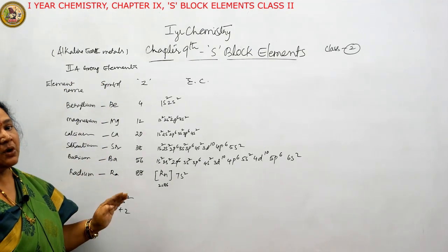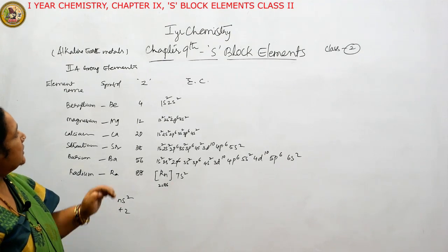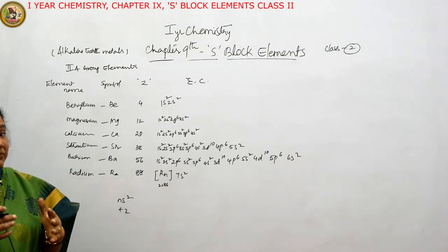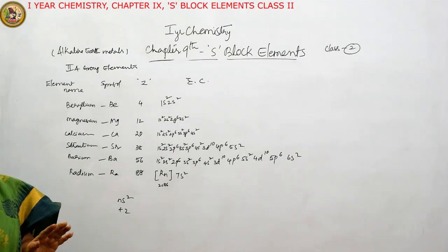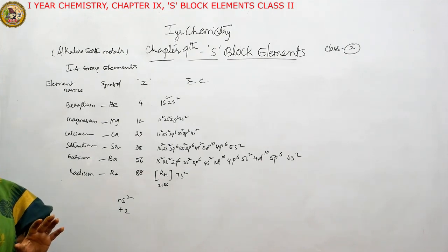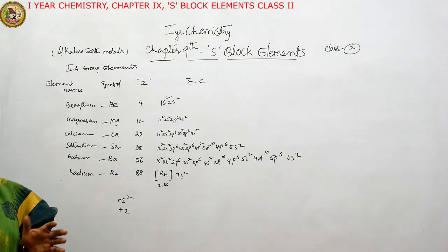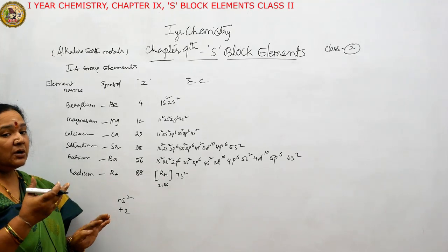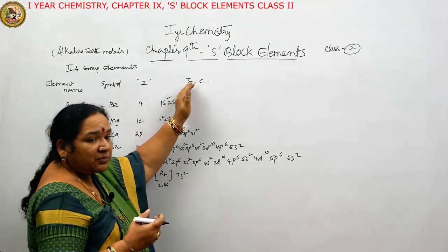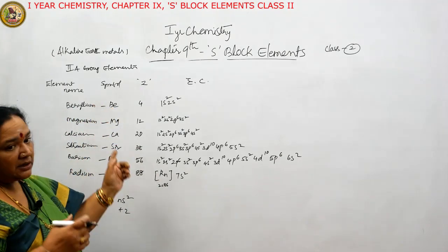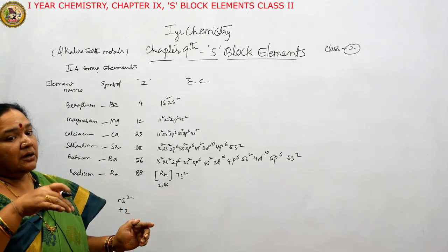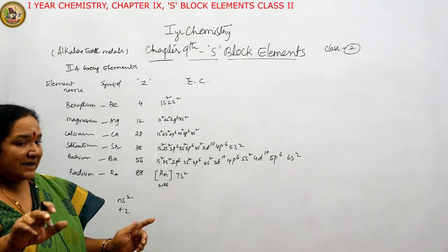As they move from top to bottom in the group, almost all these metals are very reactive. Because of their reactivity, they do not occur in free state, but they occur in the form of their compounds. As we move from top to bottom, from element to element, there is an increase of one shell — one extra shell. You can also call it as orbit; orbit and shell carry the same meaning.